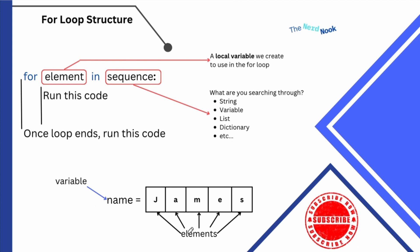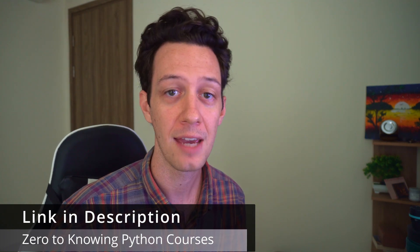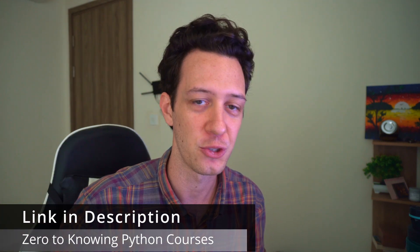Imagine I have a variable called name with the value 'James'. There are five elements inside — J, A, M, E, S. Every time the loop runs it's going to go through J-A-M-E-S. If this seems complex, I've broken this down much further in the online courses I've made as part of the zero-to-knowing series — taking you from knowing zero all the way to applying the skills you learn. They're in the link in the description below.